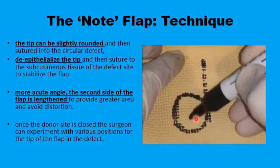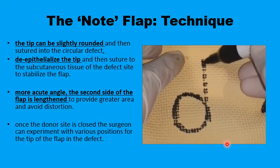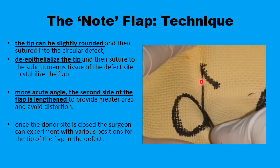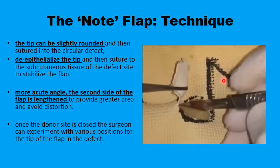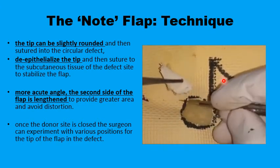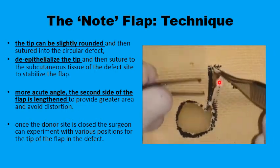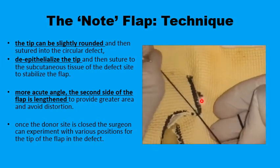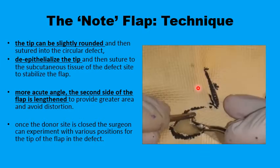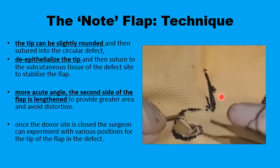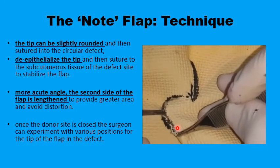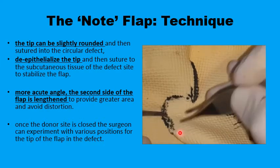The technique is straightforward. Starting with a circular defect, you draw a line tangent to the defect, parallel to one of the relaxed skin tension lines or a landmark, measuring about one to one-and-a-half times the diameter of the defect. From there you extend another line measuring about the diameter of the defect. The lesion is removed, the triangular flap is mobilized and transposed to fill the defect. The major tension vector is sutured first, then the tip of the flap is positioned along the circumference of the defect. The final shape of the sutured line resembles a question mark.